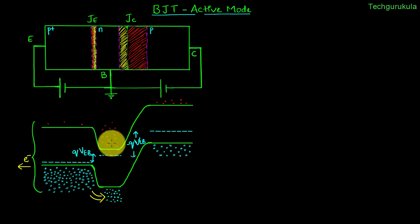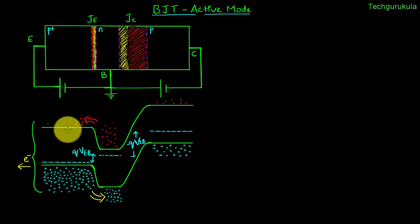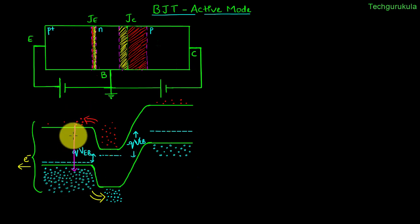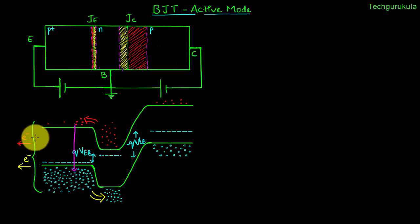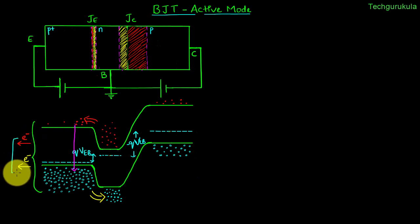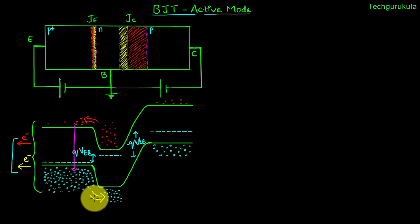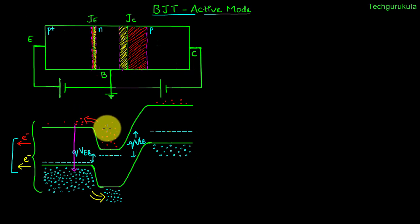At the same time, majority carrier electrons in the base would get injected onto the emitter. As these electrons diffuse through the emitter, they get recombined with the majority carrier holes in the emitter. However many holes are recombining with these electrons must be supplied by the supply again. So the supply must provide the holes required to recombine with the injected electrons from base to emitter. This contributes to the emitter current, which supplies holes for injection across the emitter junction and for recombination with electrons injected from base to emitter.